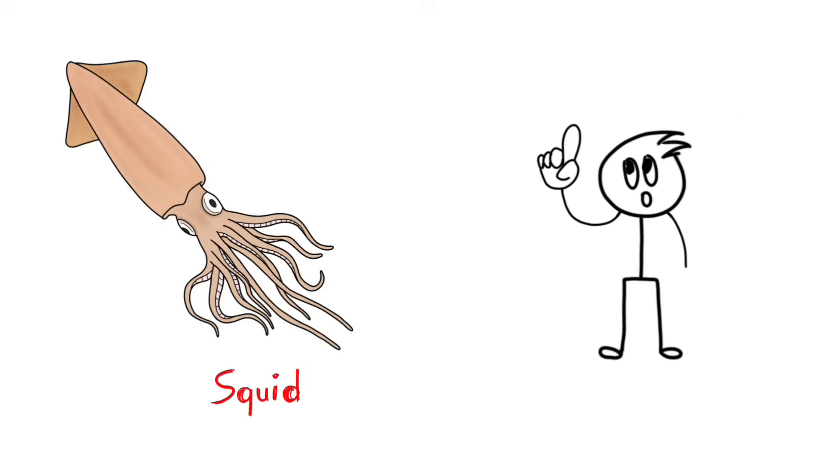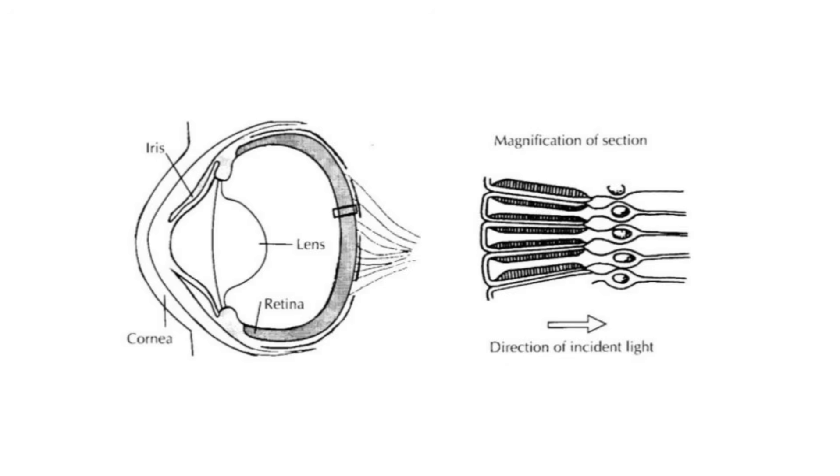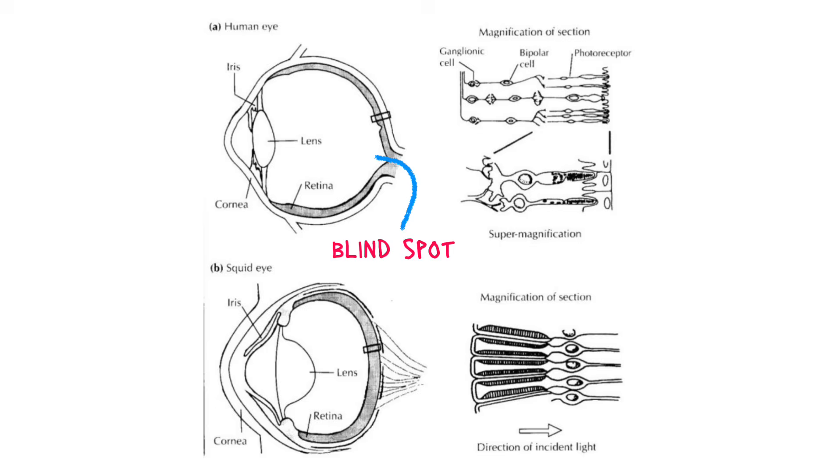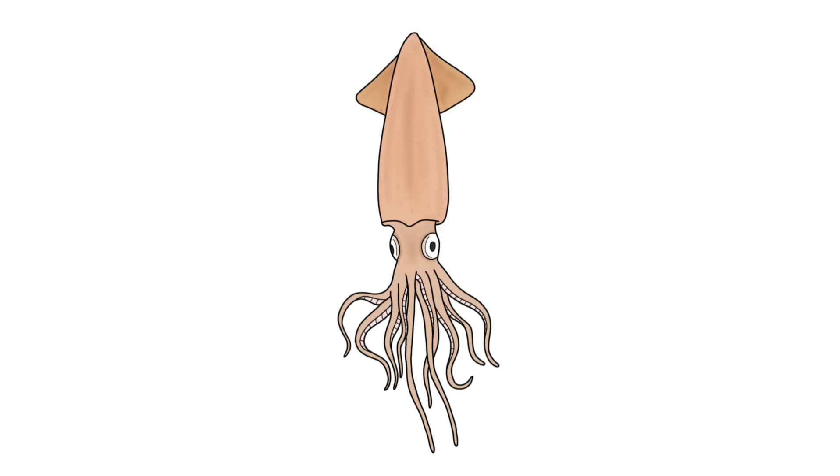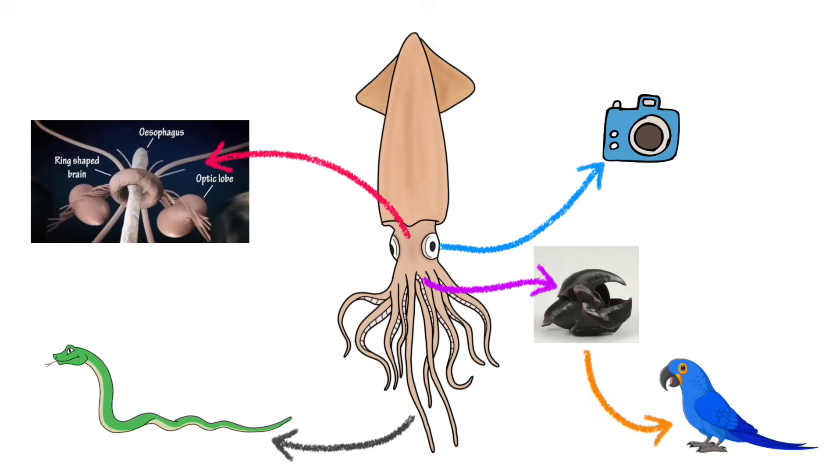Squids are weird creatures of the ocean. Though they are invertebrates, they have a complex nervous system with high intelligence and advanced eyes with no blind spots. This design is actually better than our eyes. These gelatinous cephalopods have brains like donuts, eyes like a camera, tentacles like snakes, beaks like parrots, bodies like a rocket launcher with fins maybe.